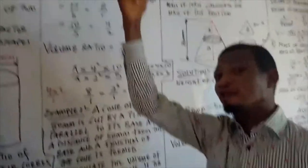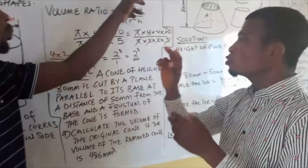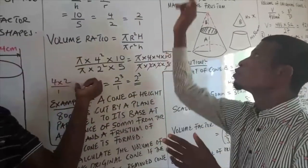Remember we said that the volume ratio is always the scale factor cubed. That's why we have cube root of 8 as 2, which is our scale factor. So if you say 2 cubed, we'll come back and give you 8 over 1.